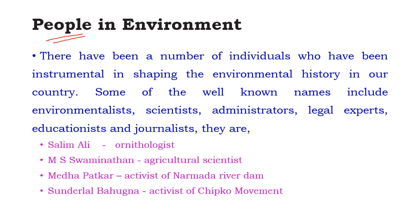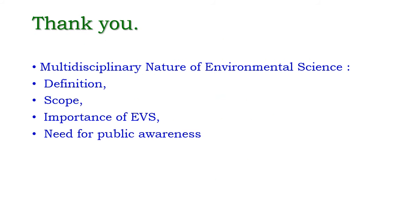Some key individuals have been instrumental in shaping environmental history in India. Well-known names include environmentalist scientists, administrators, legal experts, educationists, and journalists. These include Salim Ali, an ornithologist; M.S. Swaminathan, an agricultural scientist; Medha Patkar, activist for the Narmada River Dam cause; and Sunderlal Bahuguna, activist of the Chipko Movement. This video covered the definition, scope, importance of environmental science, and the need for public awareness under the topic of the multidisciplinary nature of environmental science.